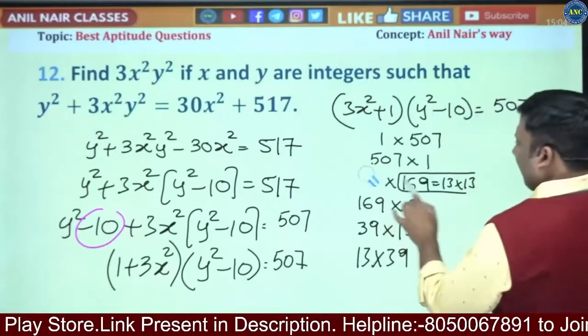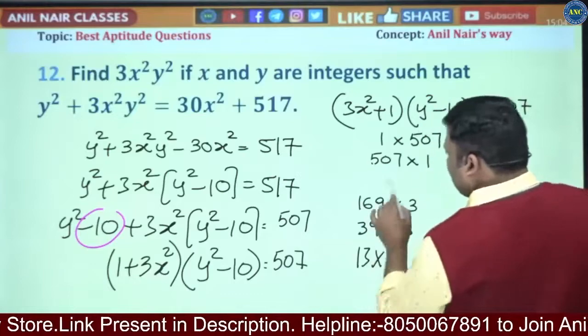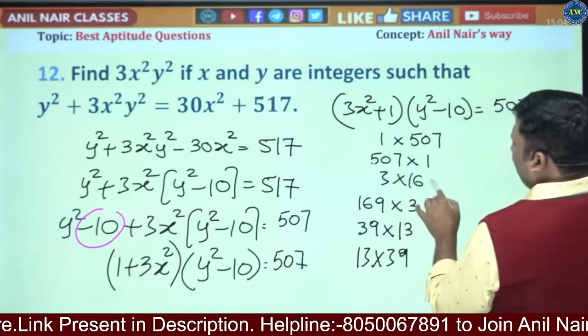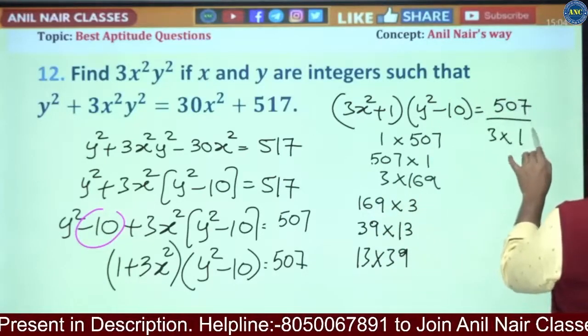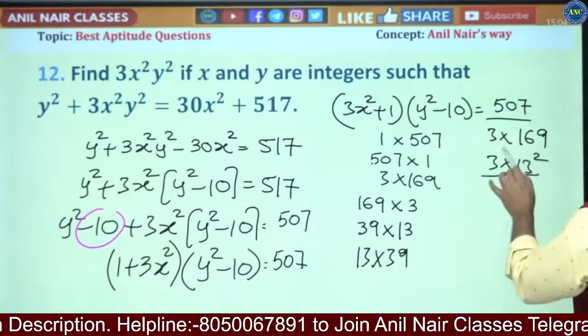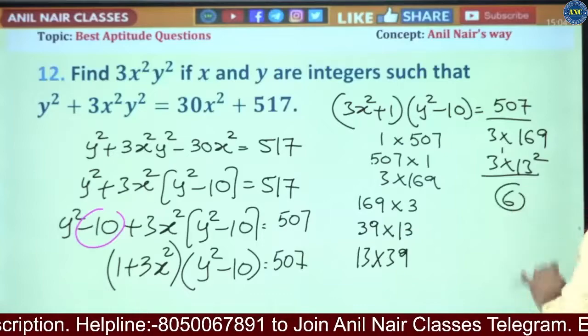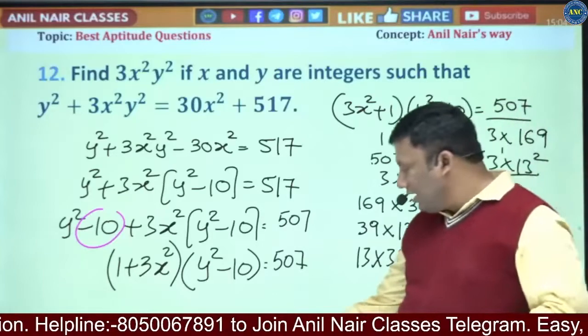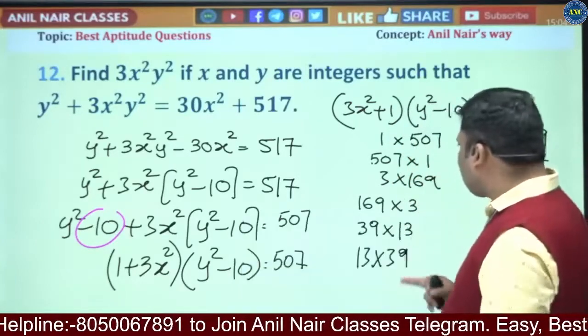It is 3 × 169. I hope you are all there with me. So this is 3 × 169, 3 × 13². So 3 × 2, total 6 cases I will get. What are those 6 cases? We will do.